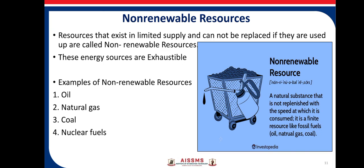The next types of energy sources are non-renewable resources. Resources that exist in limited supply and cannot be replaced if they are used up are called non-renewable resources. These are exhaustible, so we have to use them very carefully and keep some resources for future generations to live sustainably. Examples of non-renewable resources are commonly used resources like oils, natural gas, coal, and nuclear fuels.